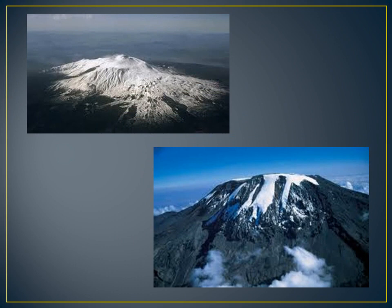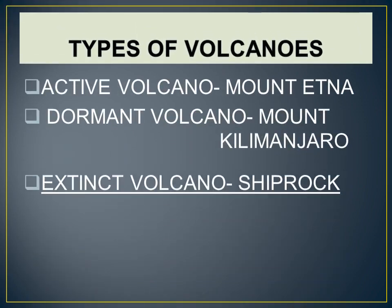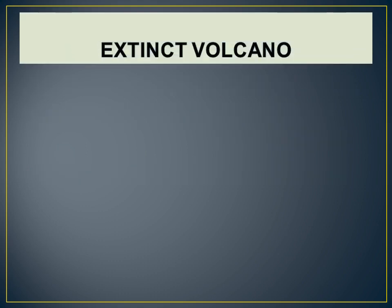The third type is extinct volcanoes — volcanoes that have not erupted during recorded history are called extinct volcanoes. For example, the Chimborazo volcano in Ecuador and the Shiprock volcano in New Mexico are considered extinct volcanoes. Now we are going to see the picture of an extinct volcano.